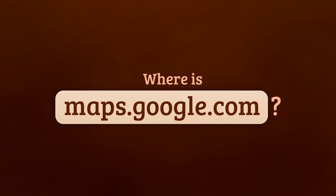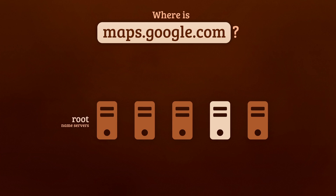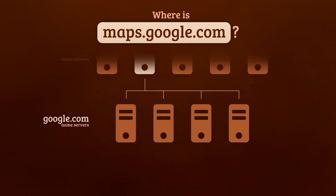Suppose you're looking up maps.google.com using DNS. A root name server will tell you to ask the .com name servers. A .com name server will tell you to ask the name servers of google.com, and a google.com name server knows the IP address you're looking for.